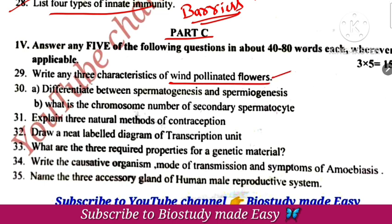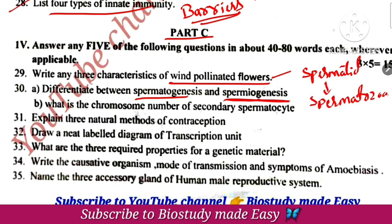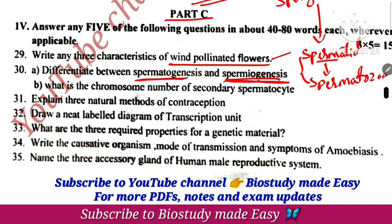Part C: characters of wind-pollinated flowers. Spermatogenesis versus spermiogenesis — spermiogenesis is the transformation of non-motile spermatid to motile spermatozoa. Spermatogenesis involves spermatogonia developing into spermatid.